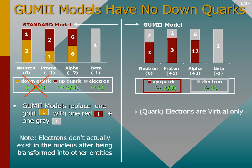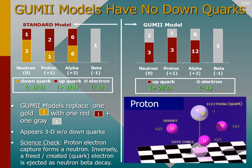So now a neutron consists of three up quarks and two electrons, and a proton consists of three up quarks and one electron. Once this exchange is made, a simple 3D structure is formed — it looks like a three-sided pyramid with quarks at the base and an electron at the top. Or the electron could be drawn underneath the quarks in a location the GUMMI models label as a go-to zone.